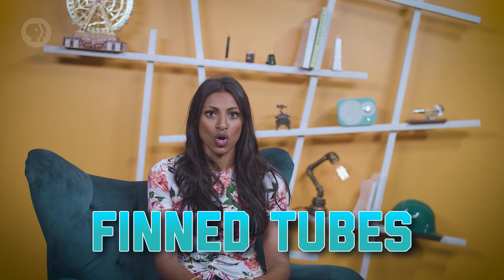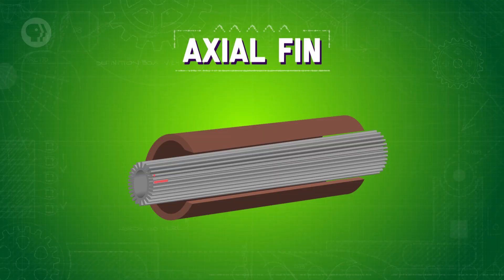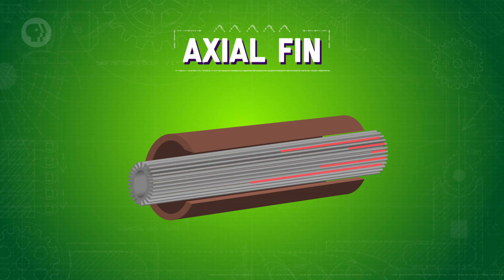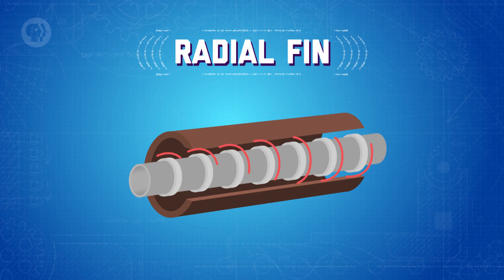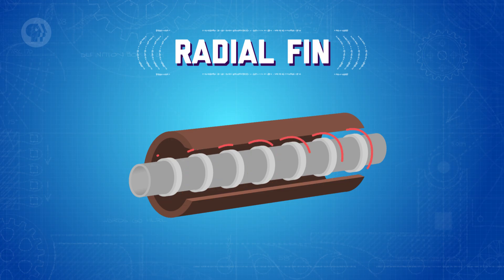So it's worth looking at some other heat exchanger designs. Take fin tubes, for example, which you'll often find in industrial applications like power plants, industrial dryers, and in the air conditioning units of large buildings. In these designs, fins are added to a tube to increase its surface area, which enhances its rate of heat transfer. There are two main types: with axial fin structures, fins run along the tube lengthwise — best suited for slower, more viscous fluid flow, like oil. With radial fin structures, discs are added to the tube and spaced out at regular intervals — best suited for faster-moving fluid, like air, to flow around the tube.